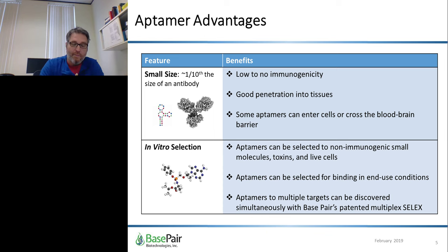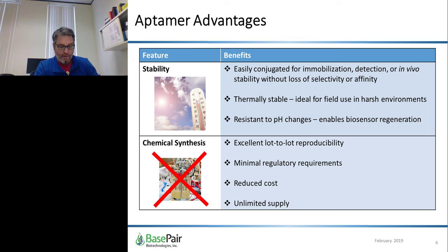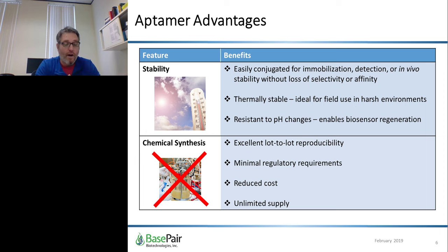Aptamers can be selected in virtually any background matrix. At BasePair, we've selected aptamers in saliva, urine, fecal extracts, seawater, horse urine for detection of doping agents in racehorses, and even mosquito saliva. Third, unlike protein-based antibodies or enzymes, aptamers are extremely stable. They can be lyophilized and go immediately back into solution. They readily refold and are not temperature sensitive, so they can be deployed in hot, austere environments for point-of-care tests.